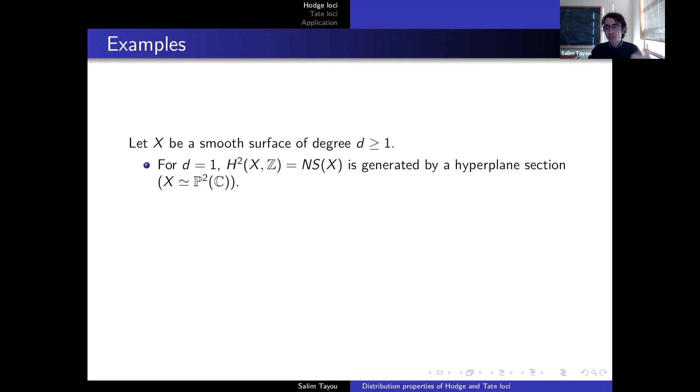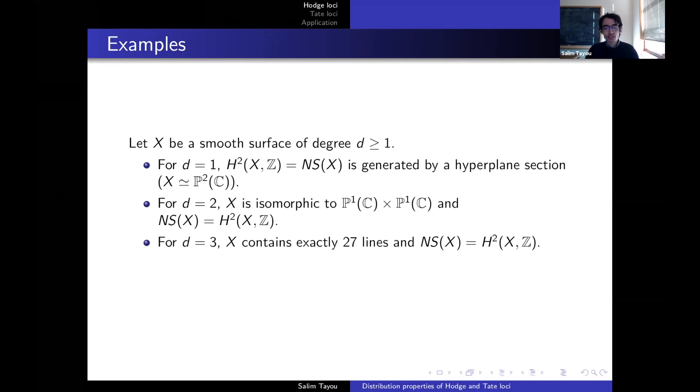Let's give some examples. I take now a smooth surface of degree D inside P3. If D equals 1, then this H2 is entirely algebraic. This is generated simply by a hyperplane section. And in fact, the surface here is very simple. It's just a projective space, dimension 2. For D equals 2, X is isomorphic to a product of two copies of P1. So this is a quadric. And again, the Neuron-Severi generates the whole H2. So the whole H2 is algebraic. And for D equals 3, it is a classical theorem of the Italian school that X contains exactly 27 lines. And again, the Neuron-Severi spans the whole H2. So one might ask, does this happen for every surface, or can we have some interesting Hodge structures? For example, what happens for D equals 4? This is the case of quartics. And for D greater than or equal to 5, the so-called general type surfaces.